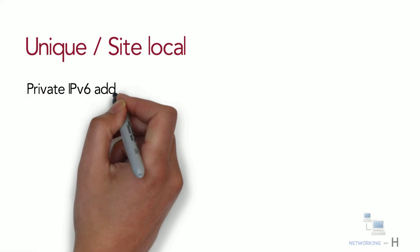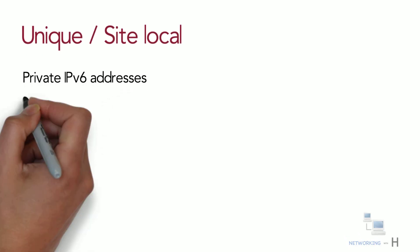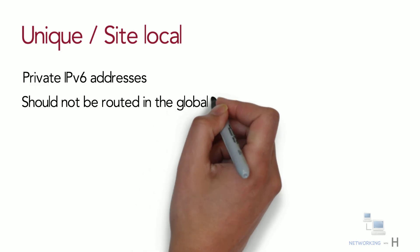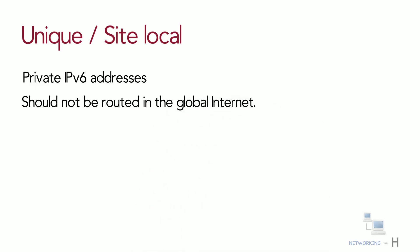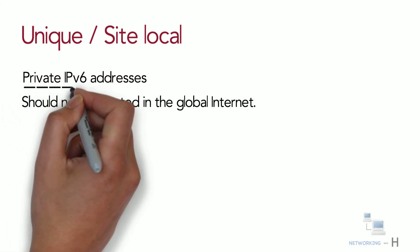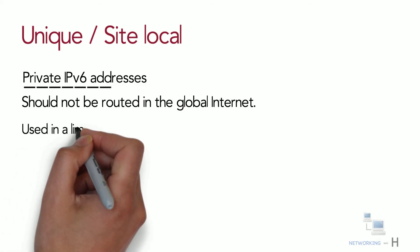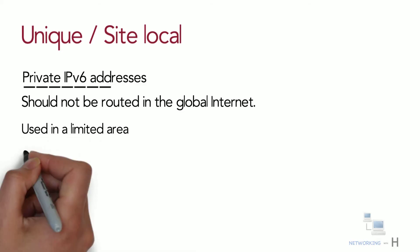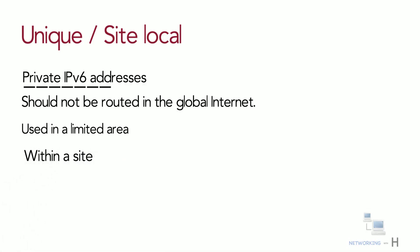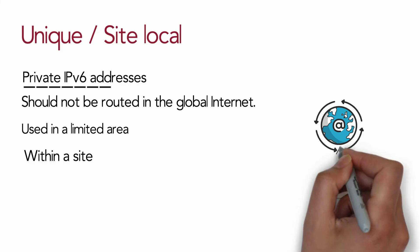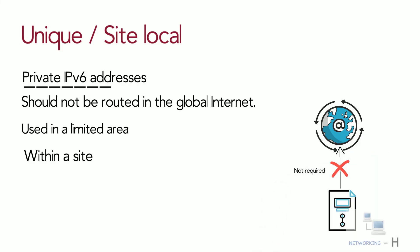Next we have unique local addresses, also known as private IPv6 addresses or local IPv6 addresses. Unique local addresses can be used similarly to global unicast addresses but are for private use and should not be routed on the global internet. They have a similar function to IPv4 private addresses — they are not allocated by an address registry and are not meant to be routed outside their domain. They are only used within a site or routed between a limited number of administrative domains, and are for devices that never need access to or from the internet.